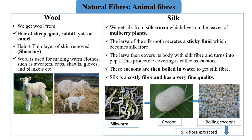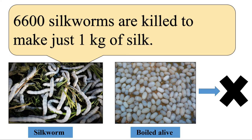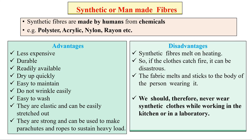Unfortunately, while boiling the cocoons, the pupa inside gets killed — it is boiled alive. Did you know that nearly 6,600 silkworms are killed to make just one kilogram of silk? Isn't it sad?